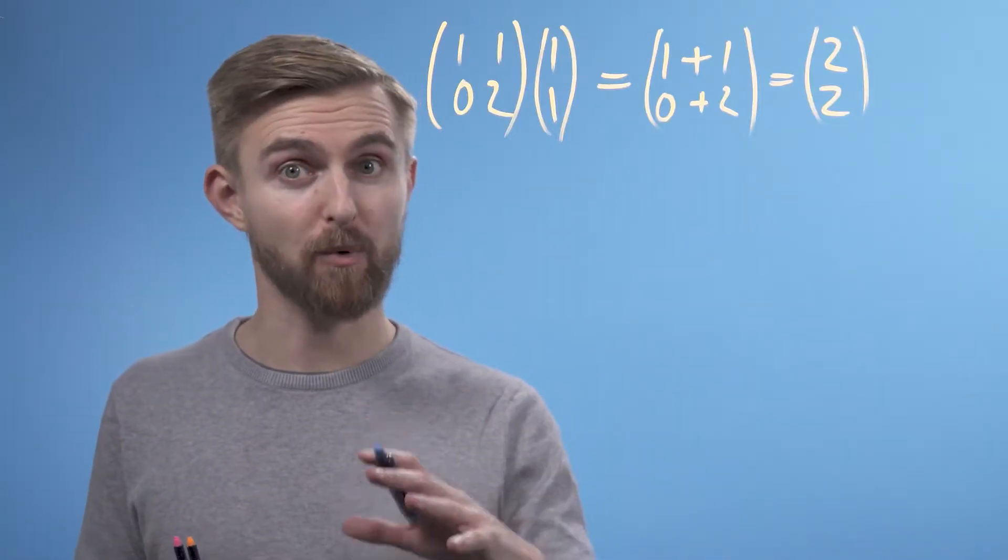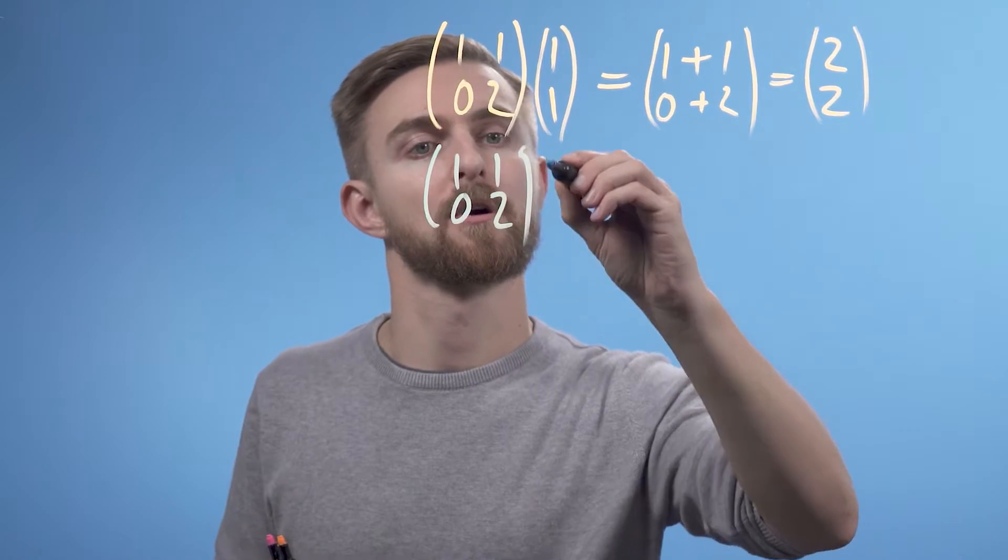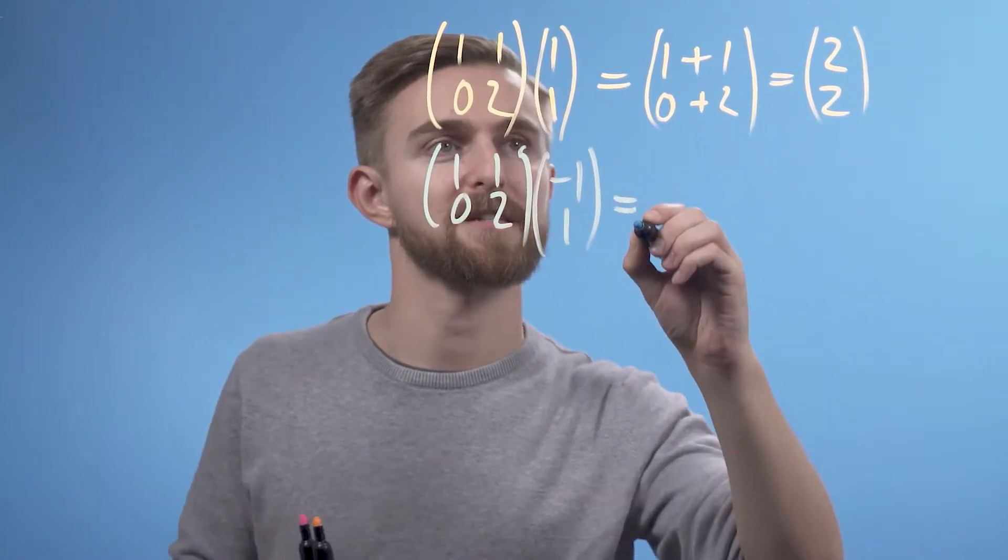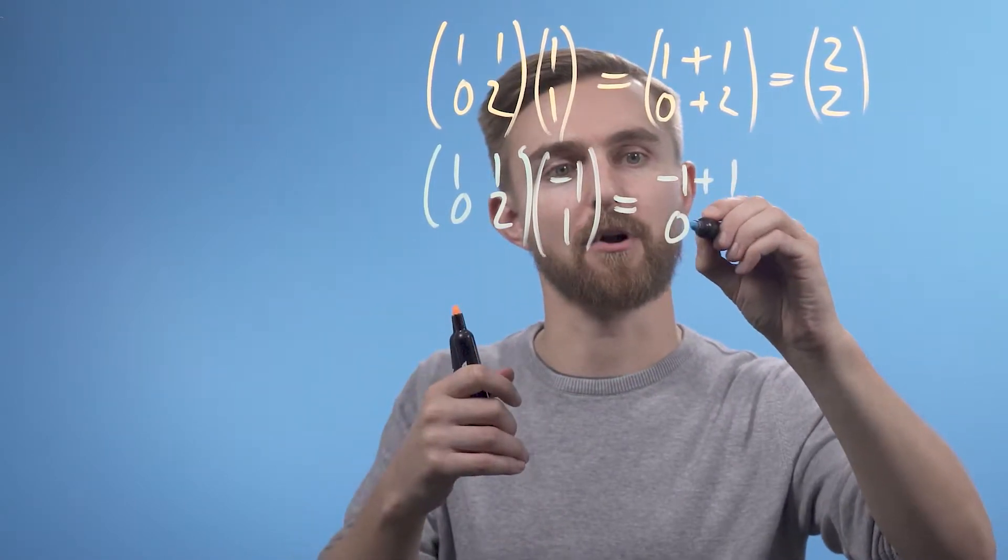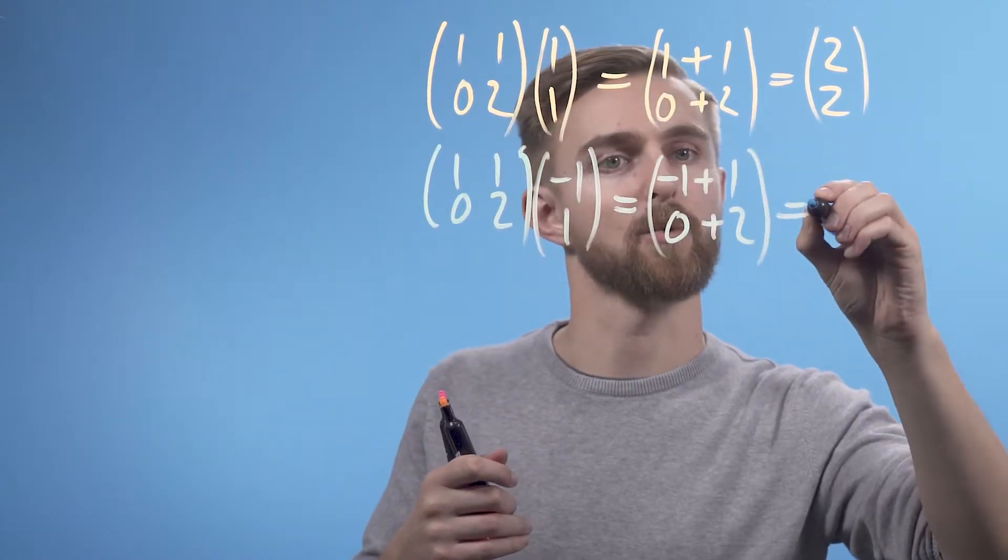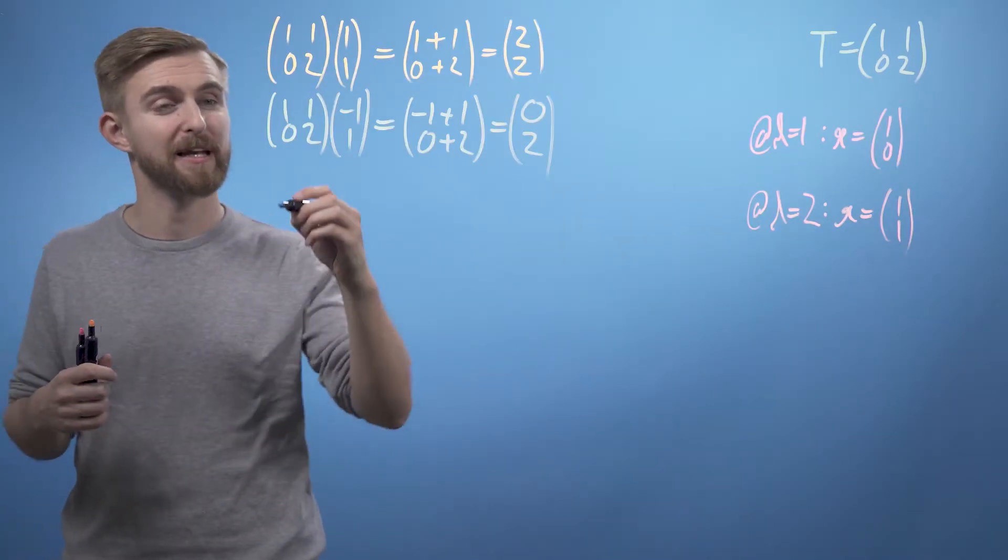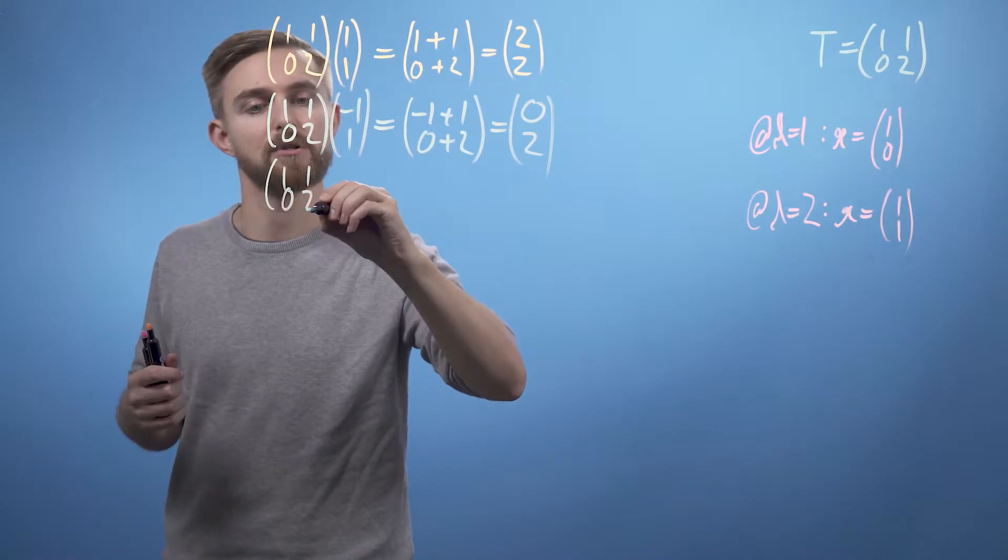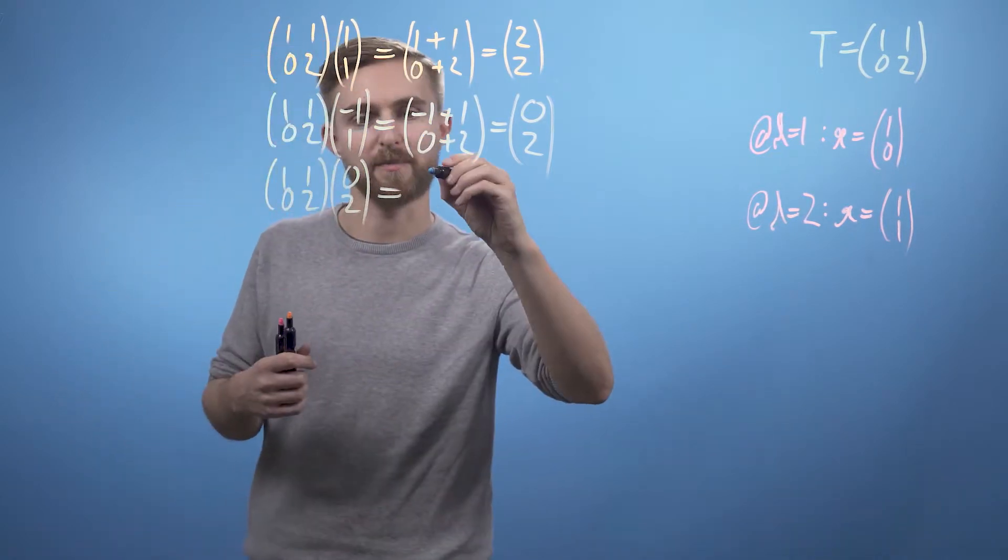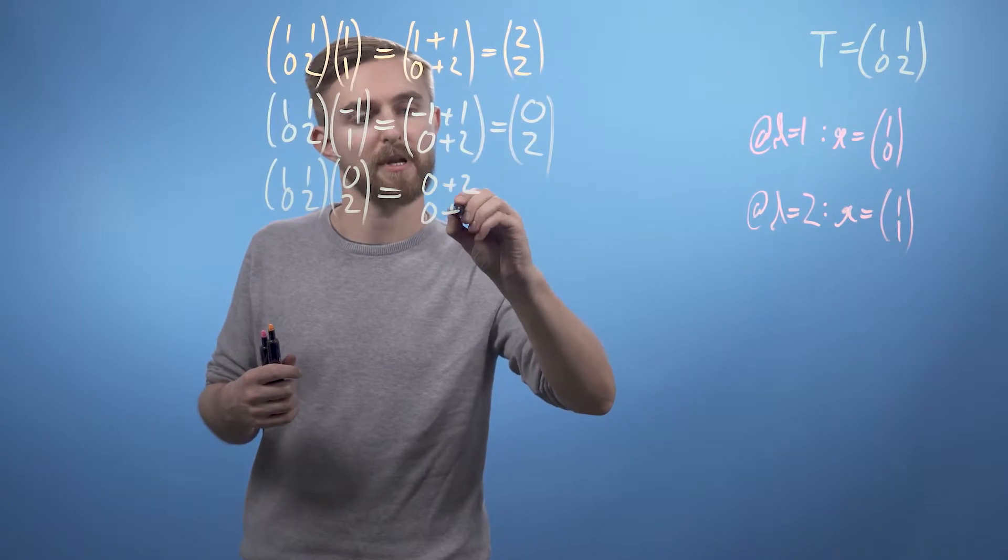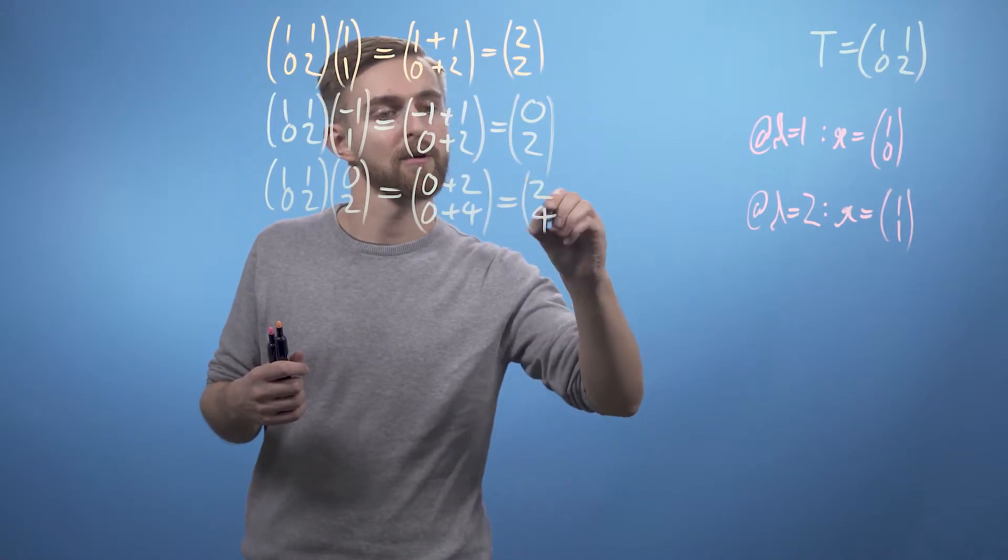Now let's consider what happens to the vector (-1, 1) when we apply T. So (1, 1; 0, 2) applied to (-1, 1) is going to equal rows times columns: -1 plus 1 and 0 plus 2, which equals (2, 2). And if we apply T again to (2, 2), we get -1 plus 3 and 0 plus 4, so this is finally going to equal (2, 4).